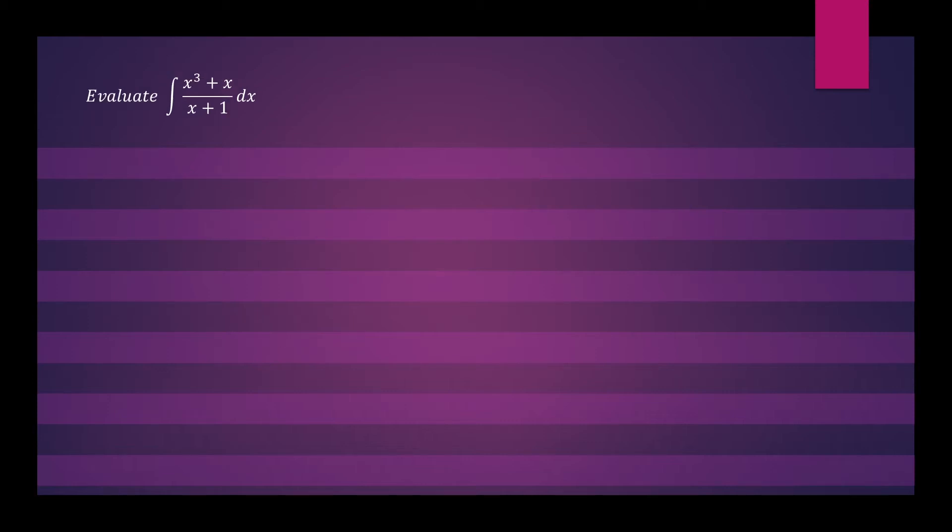In this question, we want to evaluate the integral x cubed plus x divided by x plus 1 dx. So let's divide x plus 1 into x cubed plus 0x squared for the missing term and plus x. So the first term of our quotient will be x squared. x squared times x is x cubed. x squared times 1 is x squared. Then subtract. So x cubed minus x cubed is 0.